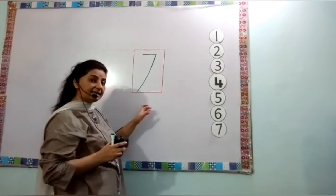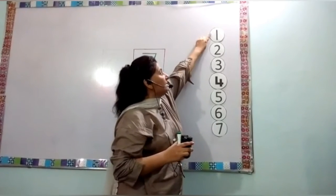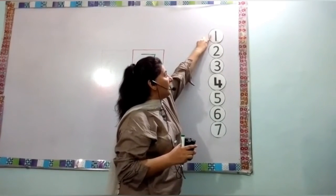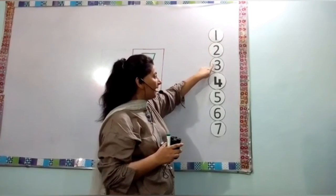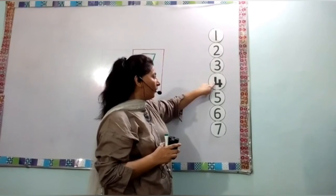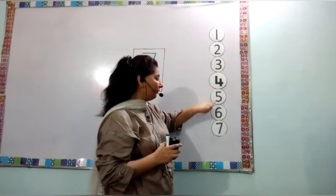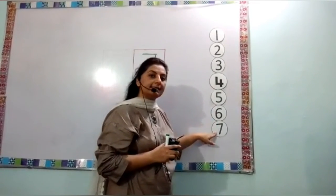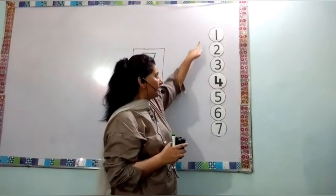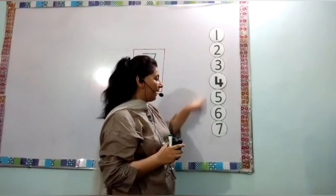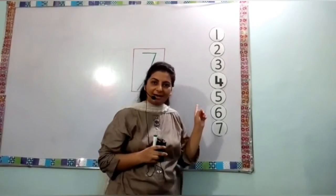Now let's revise all the numbers from the beginning. 1, 2, 3, 4, 5, 6, 7. All right. Do practice these numbers at home. Bye-bye.